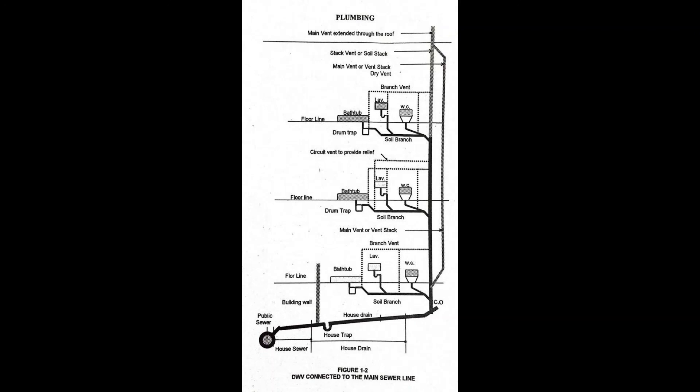Vertical pipe is a pipe installed in a vertical position or at an angle of not more than 45 degrees with the vertical.